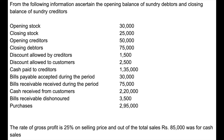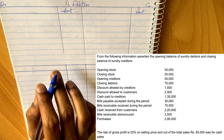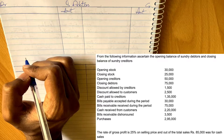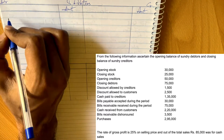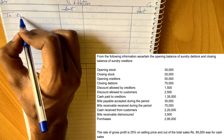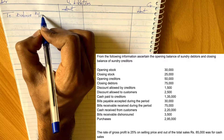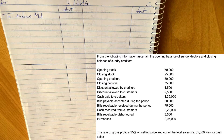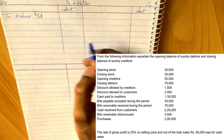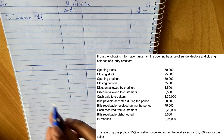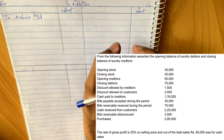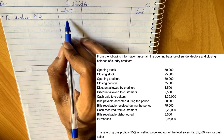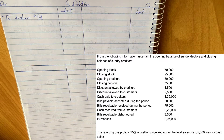Out of total sales, 85,000 was for cash sales. First, we handle the debtors account. Debtors is an asset, which means it will always have a debit balance. So the opening balance — which is what we have to find — will naturally appear on the debit side as 'balance brought down.' We'll make use of all the other information given, and the balancing figure will be the opening balance.